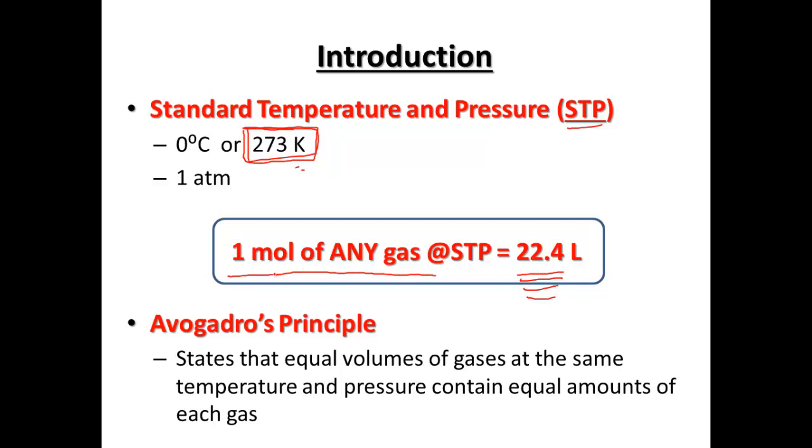1 mole of any gas at STP equals that 22.4 liters amount. So if we have 1 mole of a gas, we'd have 22.4 liters. So Avogadro's number, equal molar volume of a gas, has the same temperature and pressure with equal amounts of that gas. So Avogadro's principle is going to be helping us out here at 22.4 liters.